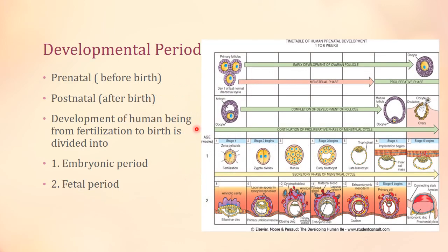The developmental periods are of two types: before birth, which is called the prenatal period, and after birth, which is the postnatal period. The prenatal period is further divided into two periods: the embryonic period and the fetal period.